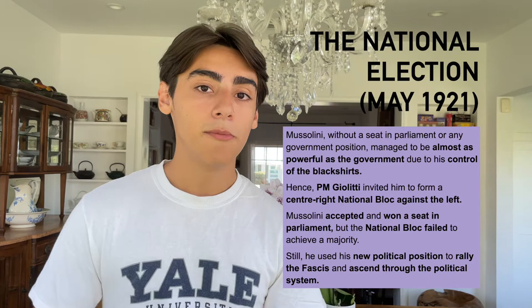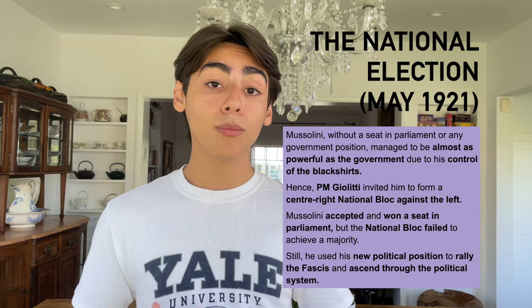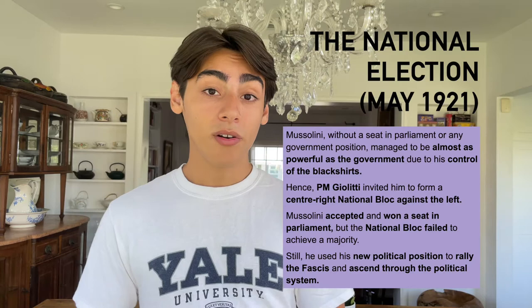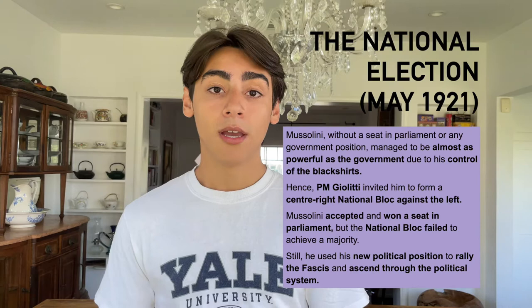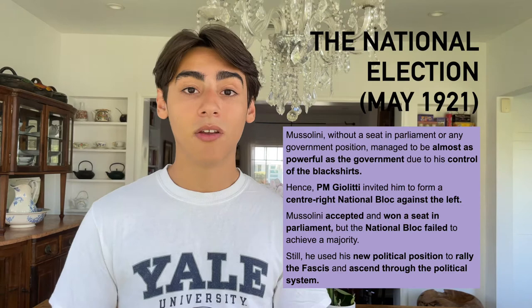However, the same cannot be said in regards to Prime Minister Giolitti, given that the whole point of including Mussolini in his national bloc was to use Mussolini's power and influence to pass the policies that the national bloc would propose in the Chamber of Deputies. Yet as the national bloc failed and very few center-right politicians actually won a seat in parliament, the prime minister had no way of doing that even with Mussolini in the chamber. In fact, the situation only worsened for the prime minister, given that he had now placed Mussolini in a very powerful position in the Italian government, which would make it very easy for Mussolini to undermine him in the future.